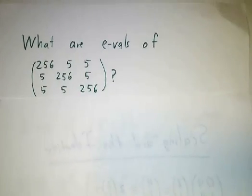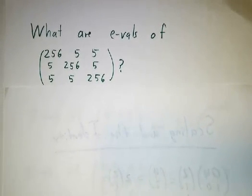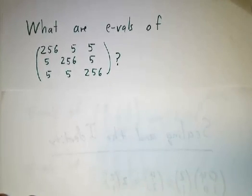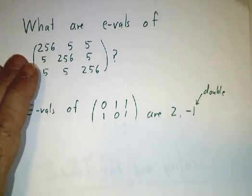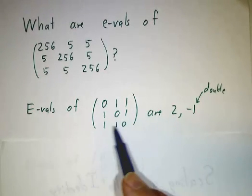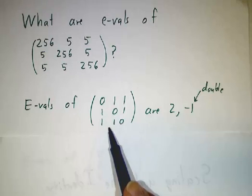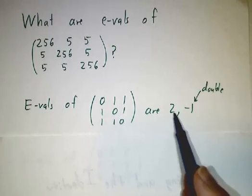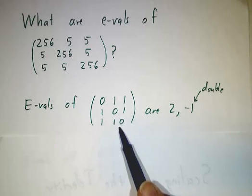Finally, I promised a 3 by 3 example in the last video. What are the eigenvalues of this matrix? Big ugly 3 by 3 matrix. Don't try to take its determinant. It's going to be a mess. But you should think that it looks kind of like the matrix (0,1,1,1,0,1,1,1,0). We've seen that matrix before.